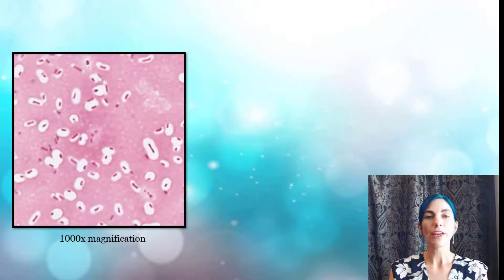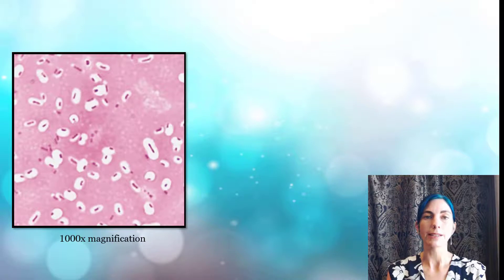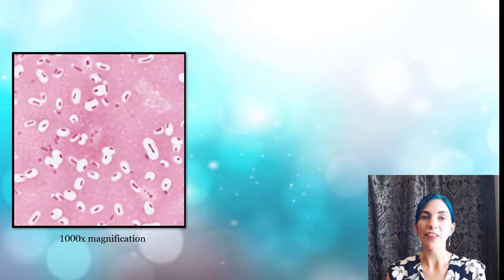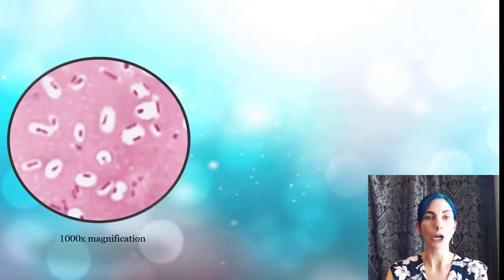So this image here shows a real picture of a successful capsule stain. Surprisingly they're actually rather difficult to do. Not every student does them successfully but this is a successful capsule stain viewed at a thousand times magnification. So what are we looking at here?